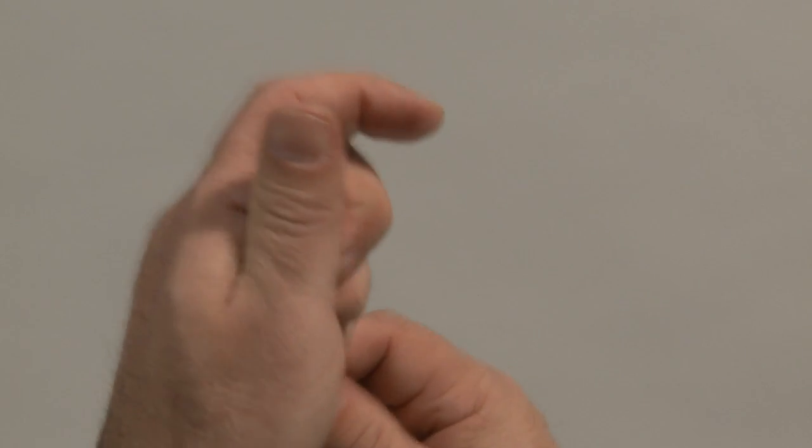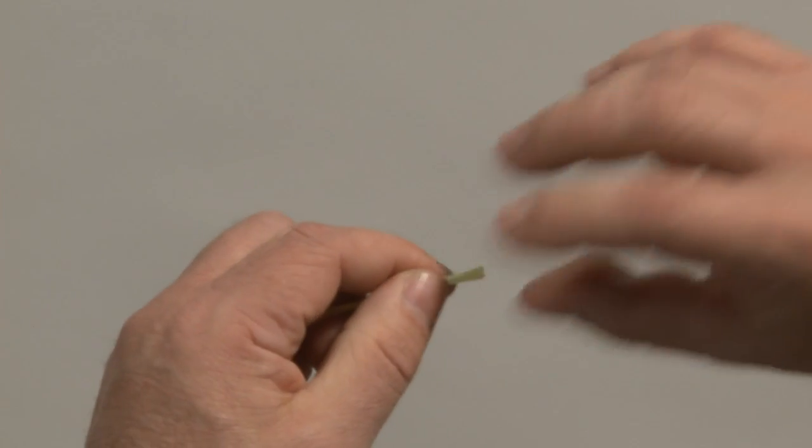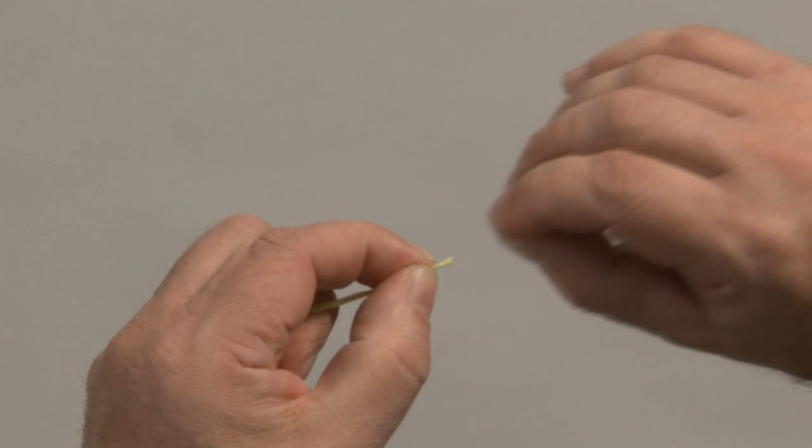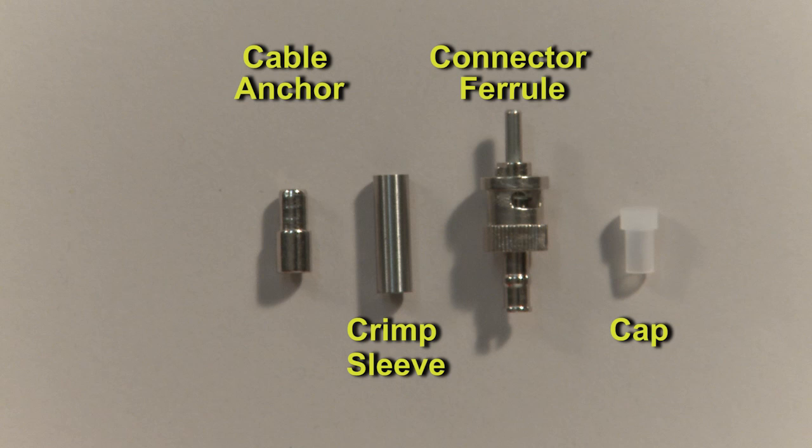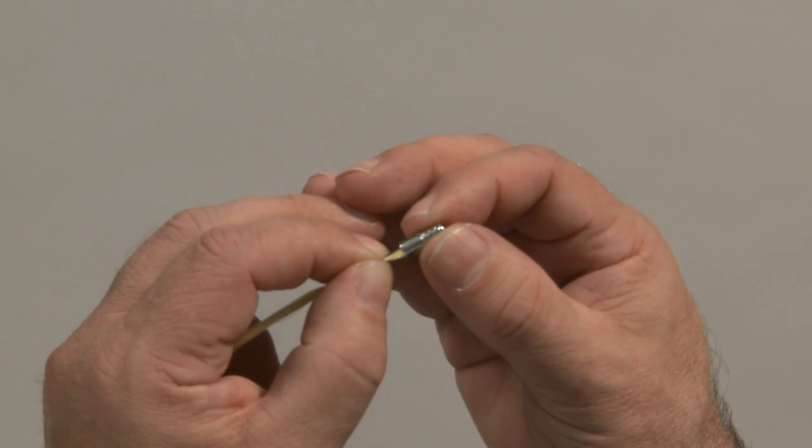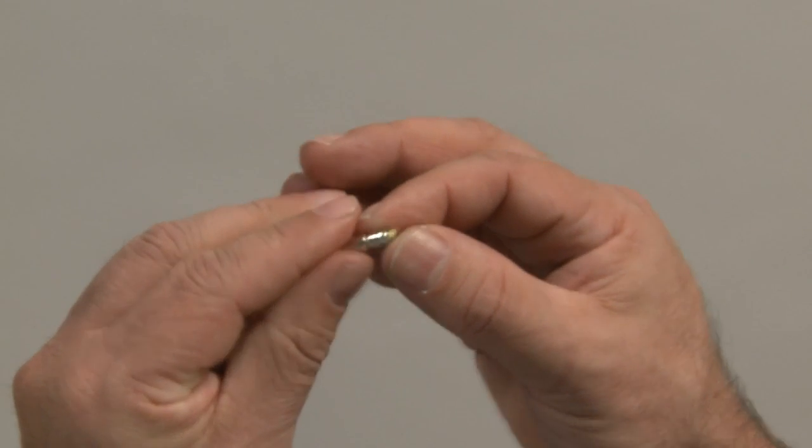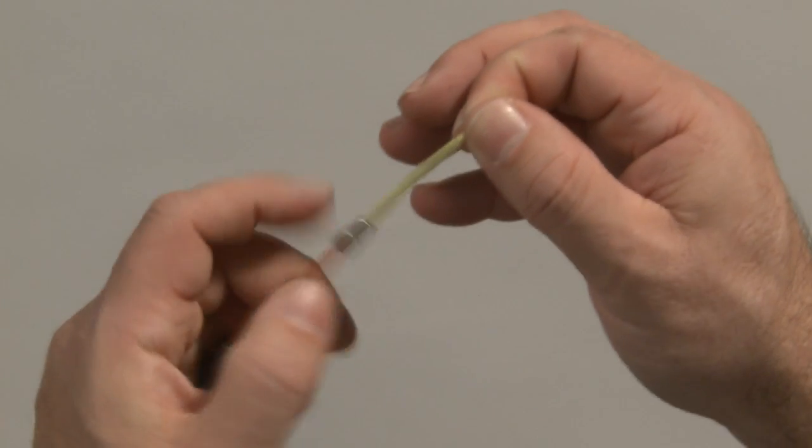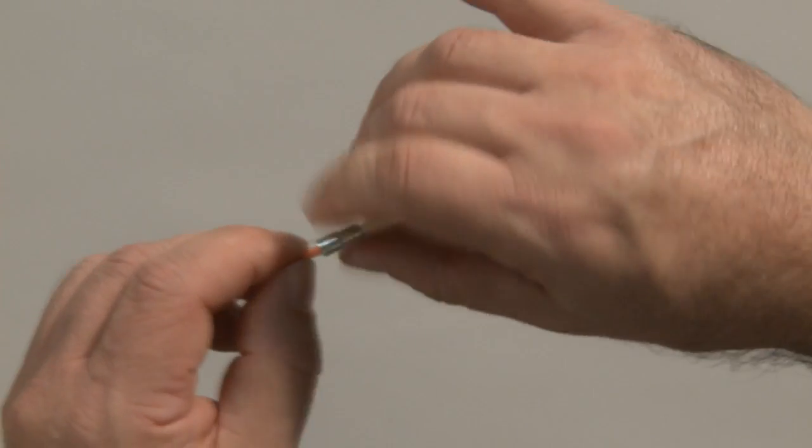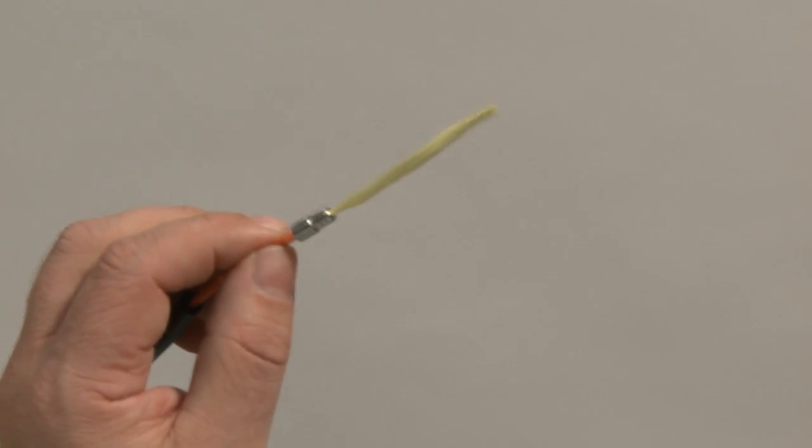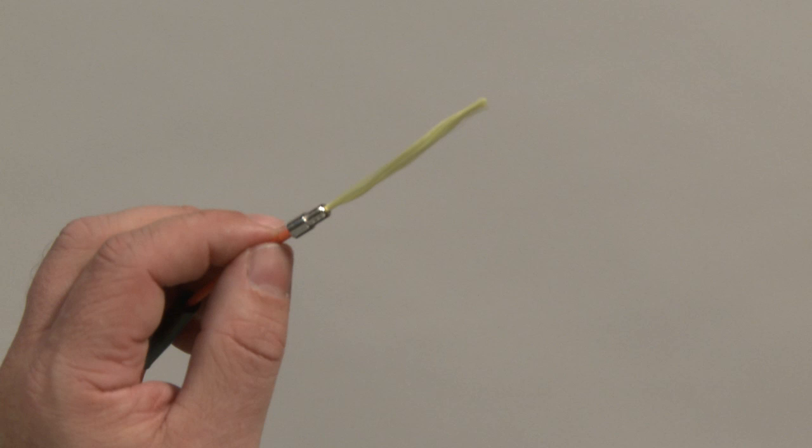Pull the aramid yarn back over the fiber. Feed the fiber and aramid yarn through the cable anchor, turning it clockwise until it bottoms out onto the cable. If a small portion of the aramid yarn does not feed through, just trim away the loose ends. This will not affect the strength or integrity of the termination.